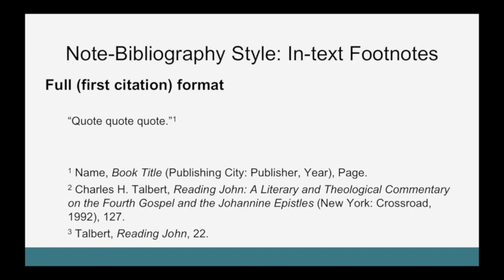So let's say in your paper you've got your first citation — you will need to use the full citation format. In the body of your paper you've got a quote in parentheses, the punctuation ending the sentence, in this case a period, followed by the quotation mark, followed lastly by the footnote number. At the bottom of your page, the matching number would appear with the following information. Citations to books are the most basic type of citation, and all other citation types are based on this style. Citations to books include the author's full name, followed by the book title in italics, and then in parentheses all the facts of publication — including the publishing city, the publisher, and the year — and lastly the page number, if your source has page numbers.